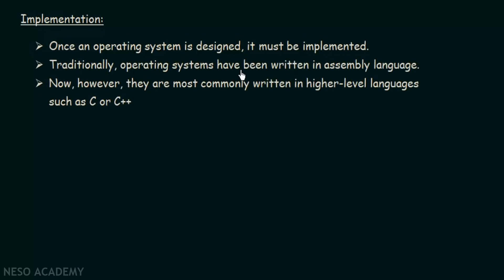The first operating systems were mainly written in assembly language, which is not easy to write — it is long and complicated. However, modern operating systems are mostly written in higher-level languages such as C or C++.